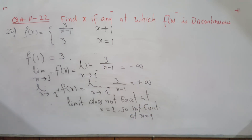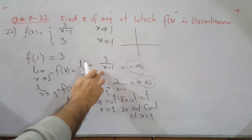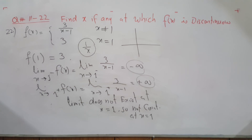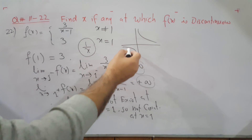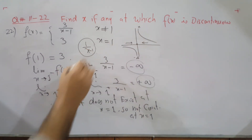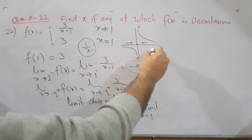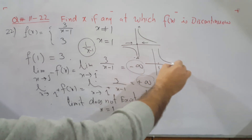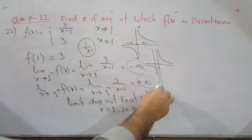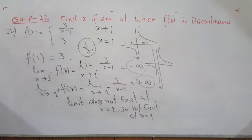To understand why we get positive or negative infinity, consider the graph of 3/(x−1). The graph of 1/x has negative infinity on the left side of 0 and positive infinity on the right side. Subtracting 1 just shifts the graph so the asymptote moves to x equals 1. Approaching from the left gives negative infinity and from the right gives positive infinity, so the limit does not exist. I hope you understand these problems — thank you very much.